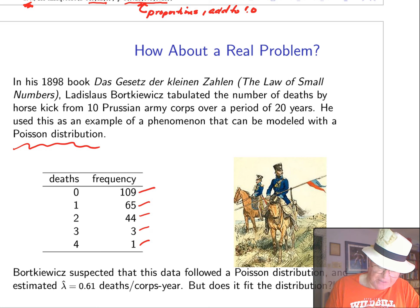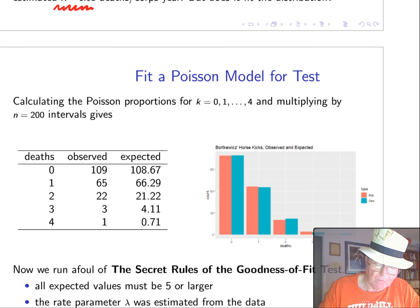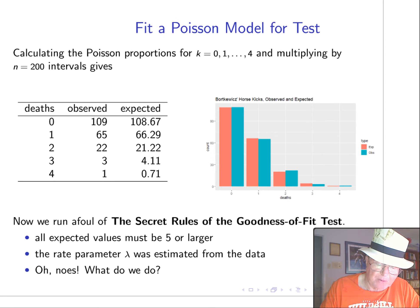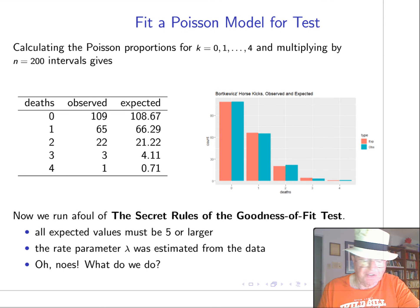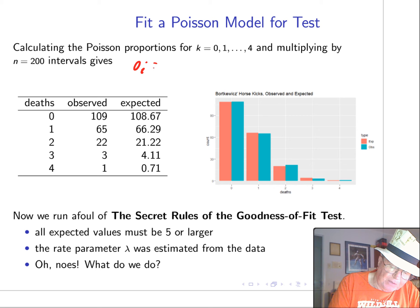So, was he right? Bortkiewicz suspected that it would follow the Poisson distribution, and he estimated the rate at 0.61 deaths per corps year. So, now, let's test to see if it fits the Poisson. So, using his estimated rate parameter, we calculated the Poisson proportions and multiplied them by 200. So, the observed is just n times p sub i, where p sub i is Poisson. And, we get these expected values. Wow. 108, 66, 21.22, 4, and 0.71. If we graph it, this looks a good fit.